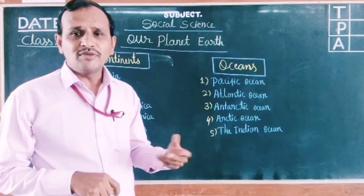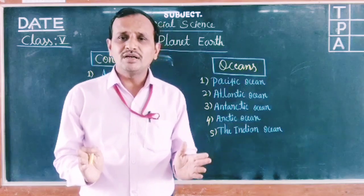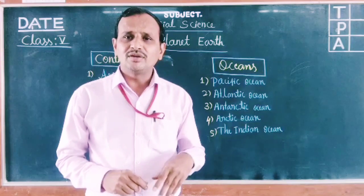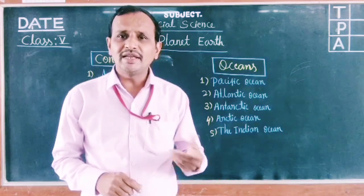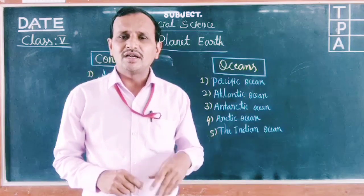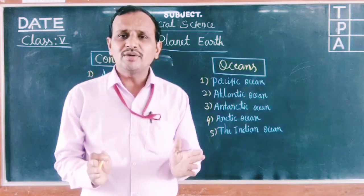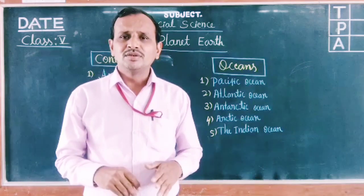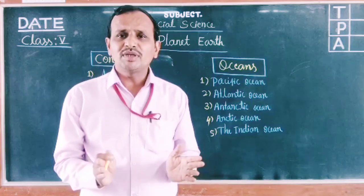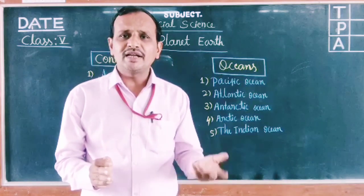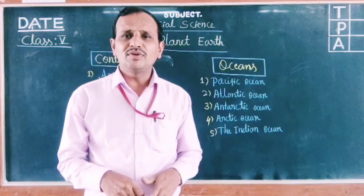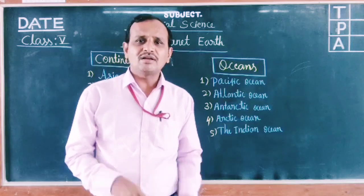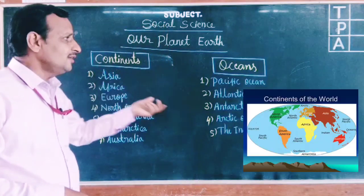So what we understand here is that the surface of the Earth is divided into mainly two parts. One part is the continent, which is the land area. And another part covers water bodies like oceans. So in this way, the outer surface of the Earth is divided into two parts — one is land, and the other is oceans.